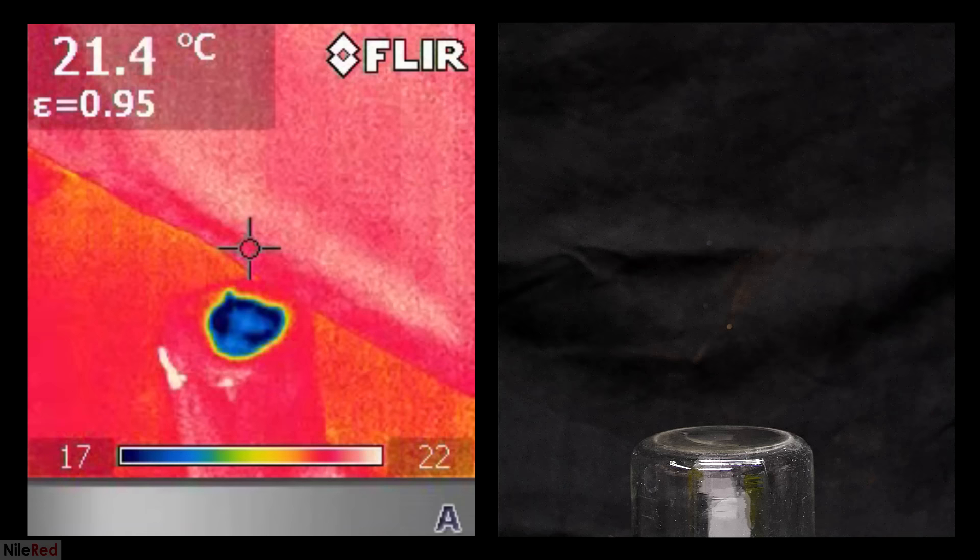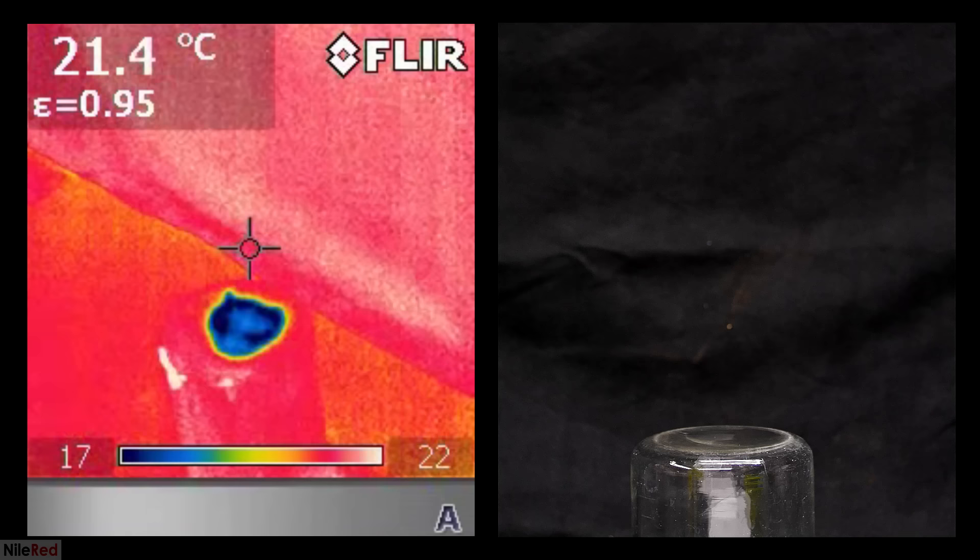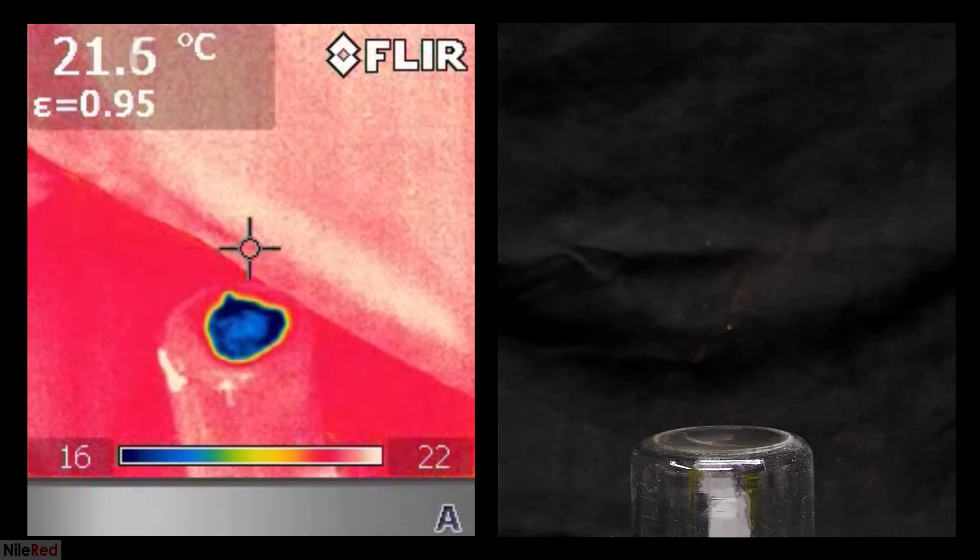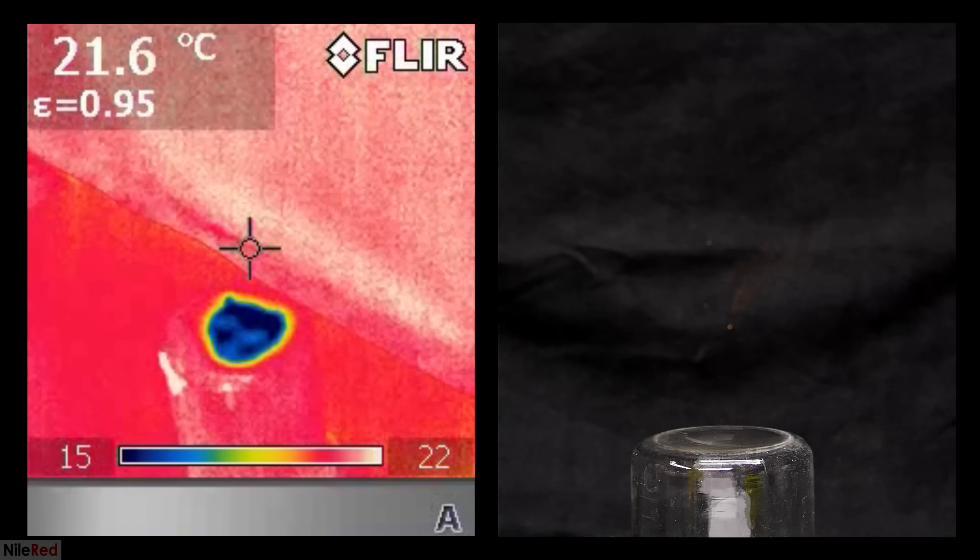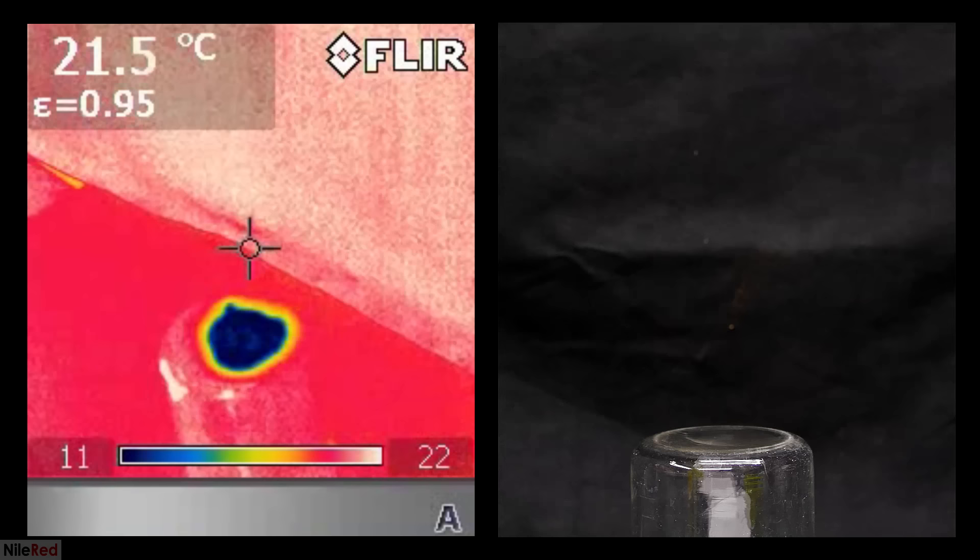In a liquid, we have a mixture of molecules that are all at varying energy levels. Some of the higher energy molecules near the surface are actually able to overcome the forces that are keeping them as a liquid, and they escape as a gas. When these higher energy molecules are able to leave the liquid, the average energy of the molecules left behind is lower. A lower average energy level means a lower temperature, and an overall cooling effect.